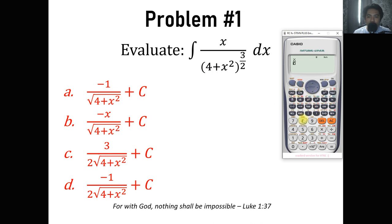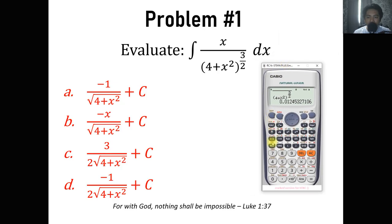We have alpha x divided by (4 plus alpha x squared) raised to 3 halves. You are going to give a value of x — always choose 0.1. Calculate it and you will get a value. Store it into memory A using shift store A for later comparison. Then go to the choices and differentiate each one using the same value x equals 0.1. Whichever choice equals what we stored, that is the correct answer.